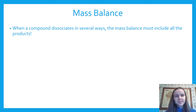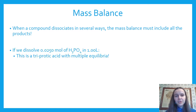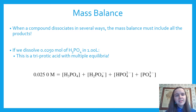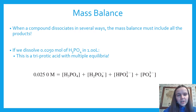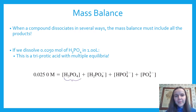If a compound dissociates in multiple ways, include all products in the mass balance. For phosphoric acid H₃PO₄ at 0.025 M in one liter — it's triprotic with multiple equilibria — the total concentration 0.025 M equals the sum of all forms: [H₃PO₄] + [H₂PO₄⁻] + [HPO₄²⁻] + [PO₄³⁻] = 0.025 M. We include this neutral compound because it's mass balance — where did the molecules go — not charge balance.